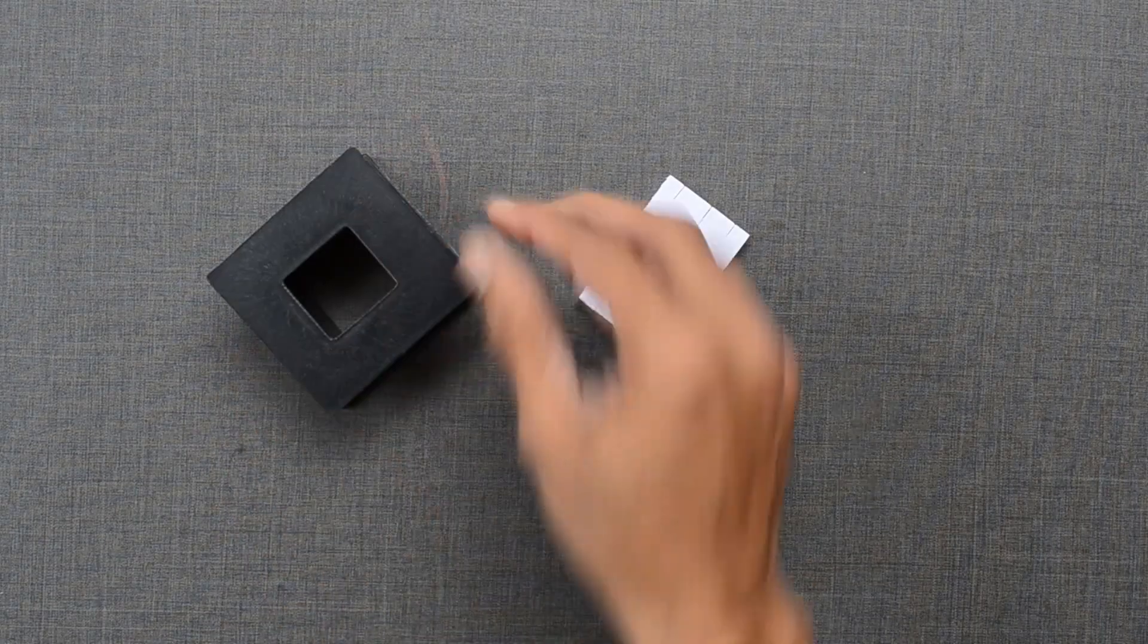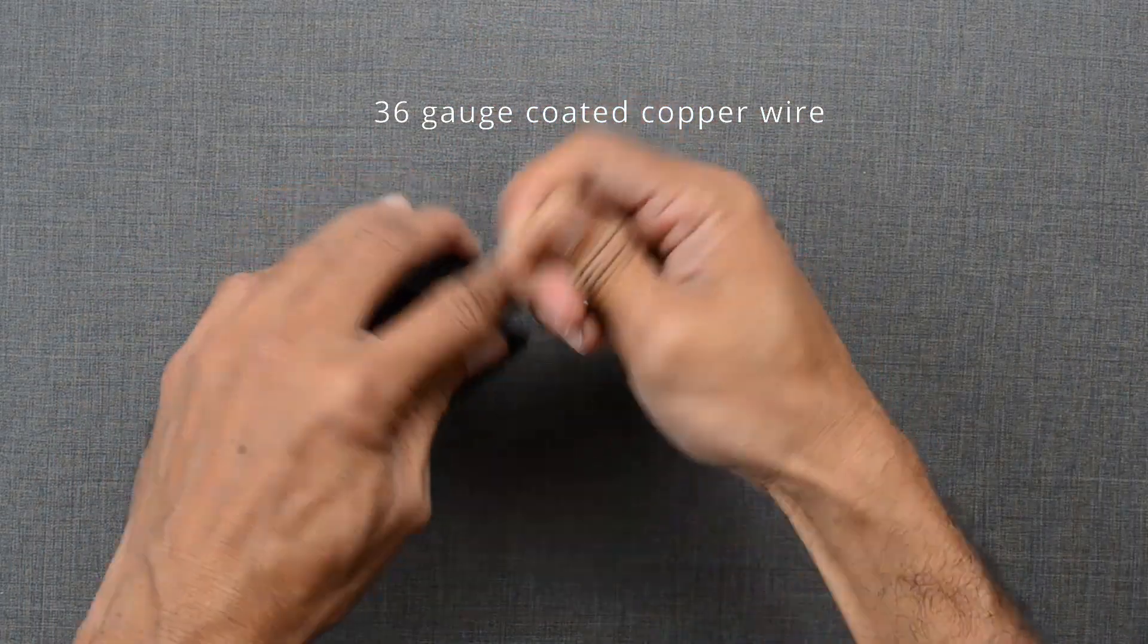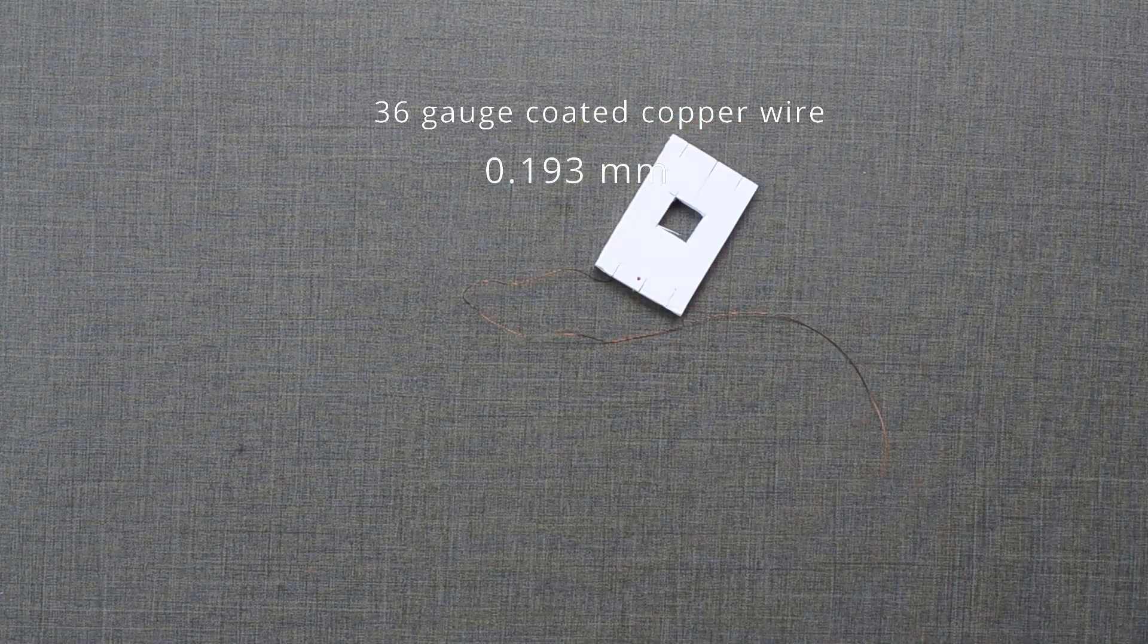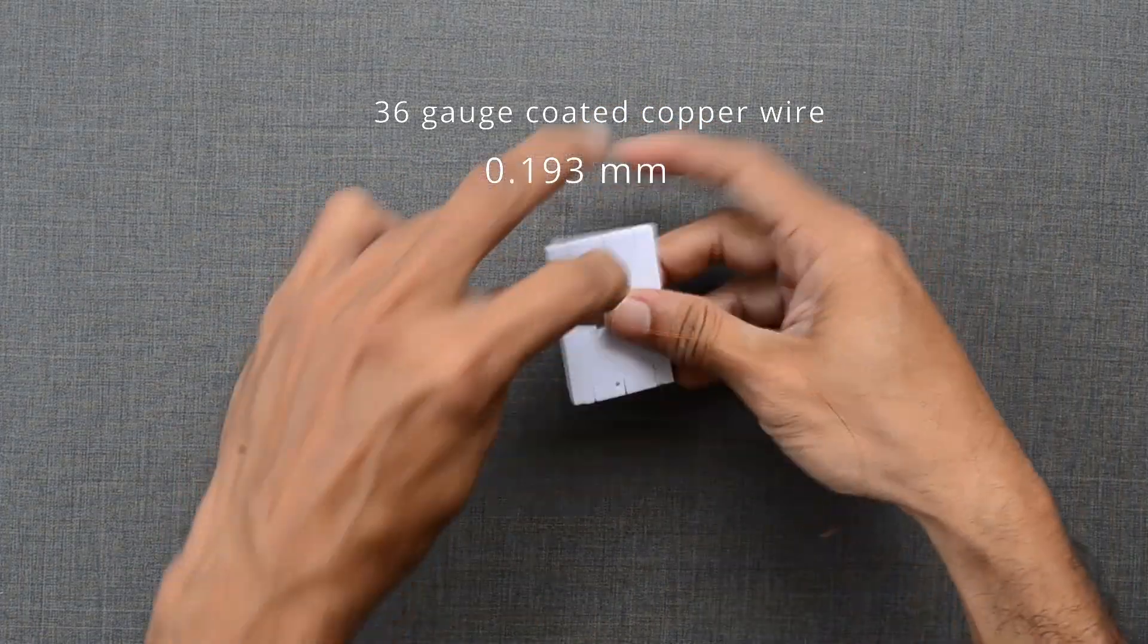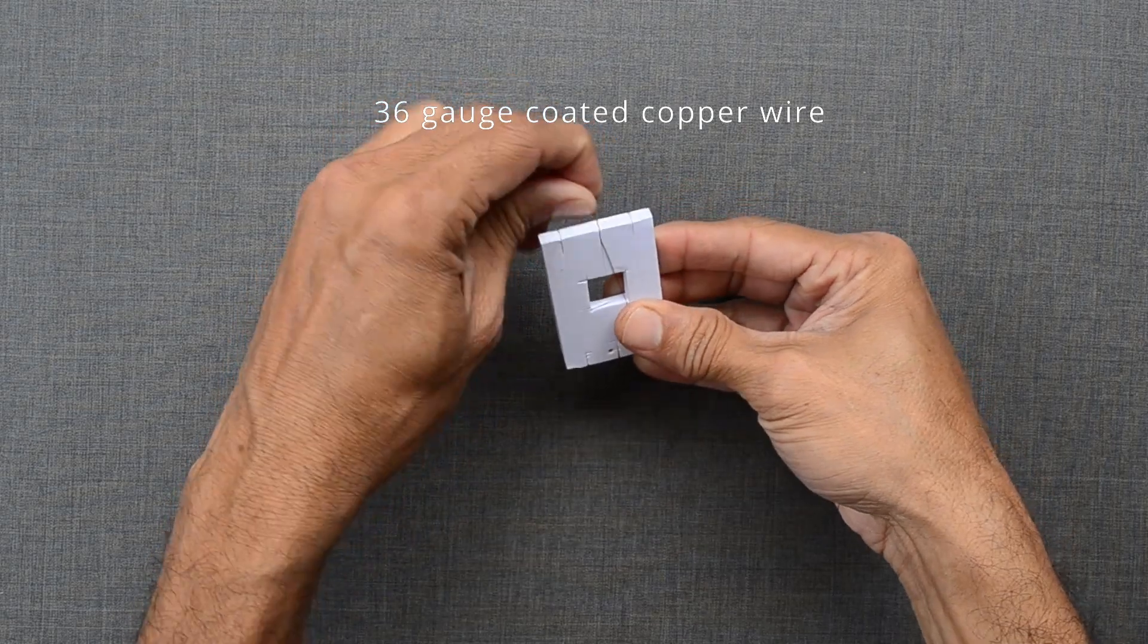We will take this 36 gauge coated copper wire used for motor winding. Its diameter is 0.193 mm. When placed in the path of red laser light, we get a nice interference pattern on the screen.